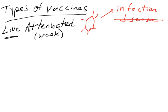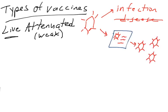A live attenuated vaccine is really good because when it infects your cells, it produces more viral particles in your body. But these viral particles do not cause disease. The infection does not cause disease.